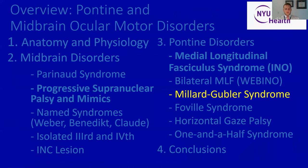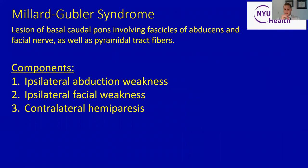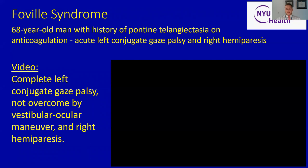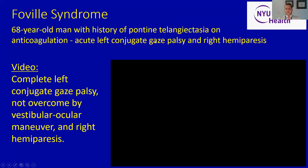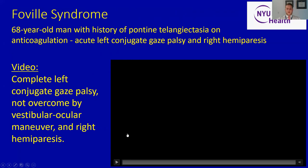Moving on to wrap up with Millard-Gubler syndrome, which is another named syndrome involving a lesion of the basal caudal pons involving the fascicle of the sixth cranial nerve (abducens) and the facial nerve, as well as pyramidal tract fibers important for movement. These patients will have, on the same side of their lesion: diminished abduction, facial weakness, and hemiparesis on the opposite side of the body. So they may have double vision and weakness on one side of the body. Foville syndrome is another syndrome with conjugate gaze palsy and contralateral hemiparesis that cannot be overcome by vestibuloocular maneuver.